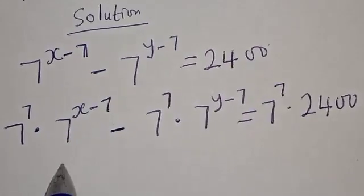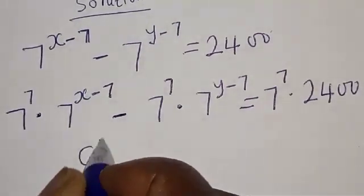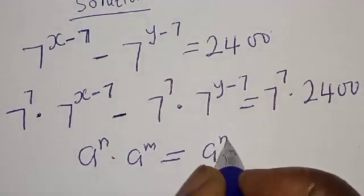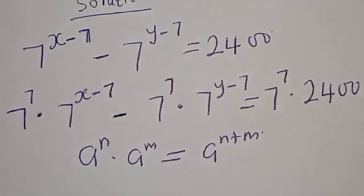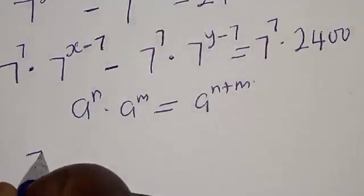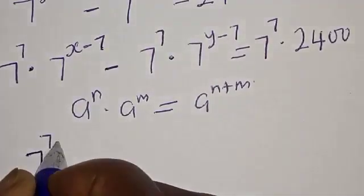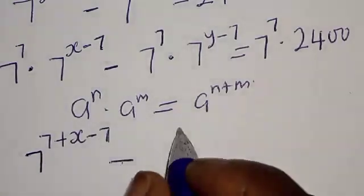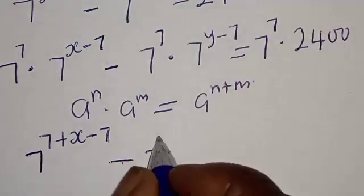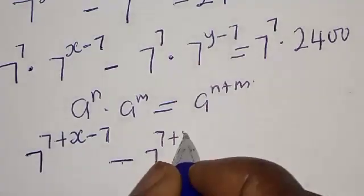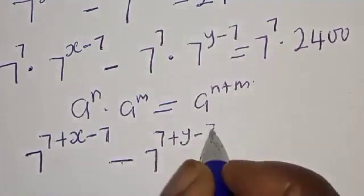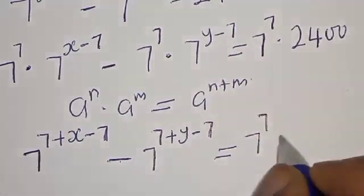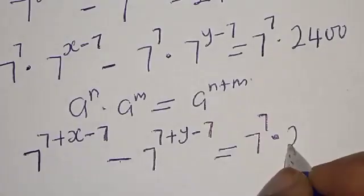Now remember that if you have a raised to power n multiplied by a raised to power m, that is the same as a raised to power n plus m. Then we have 7 raised to power 7 plus x minus 7, minus 7 raised to power 7 plus y minus 7, equal to 7 raised to power 7 multiplied by 2400.